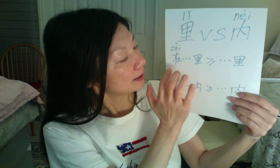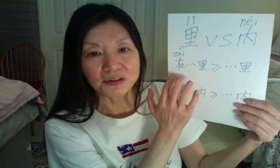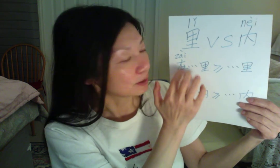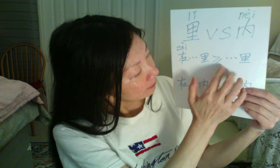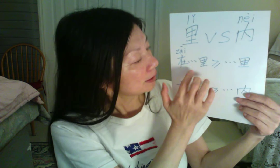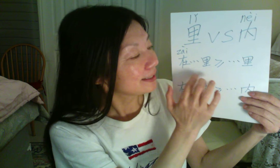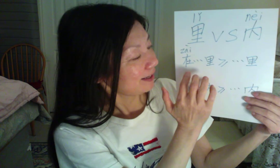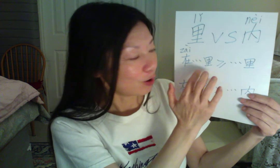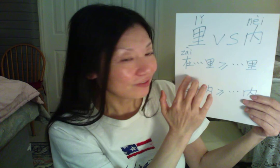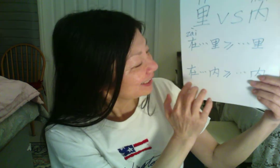When we use 在 + 什么 + 里, it is more specific about the location. Adding 在 emphasizes the location. For example, 在家里 — more emphasis on 'at home.' Without 在, you can say 家里, but 在家里 puts more emphasis on the location. 你在哪儿? You say 家里 or 在家里 — 在家里 more strongly emphasizes 'I am at home.'